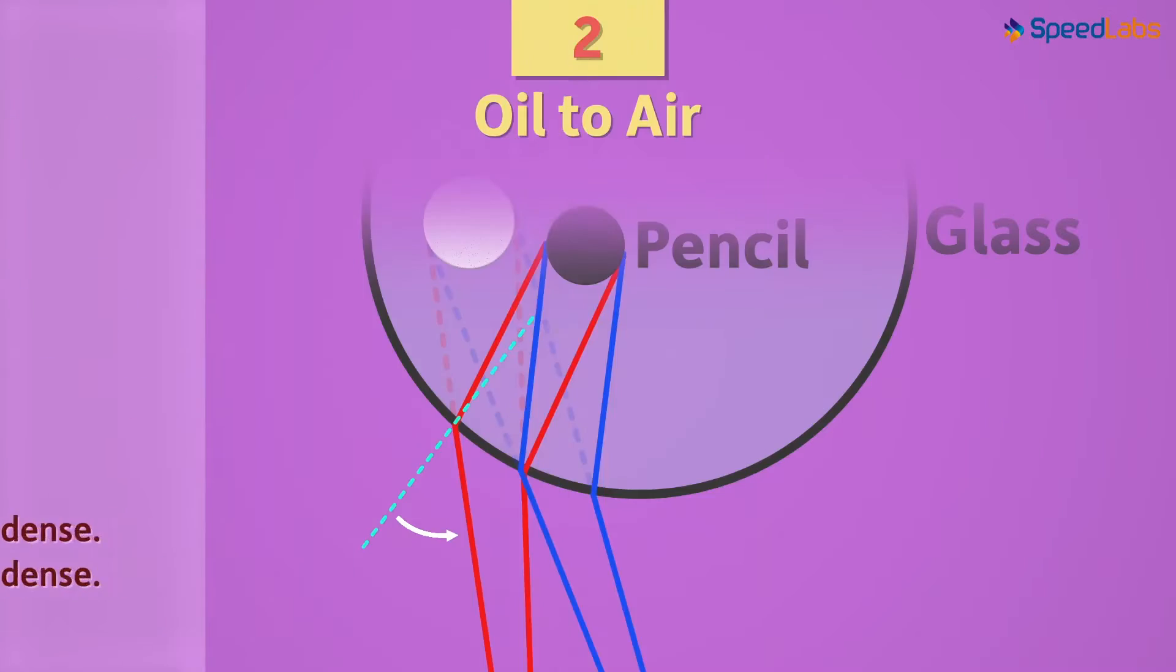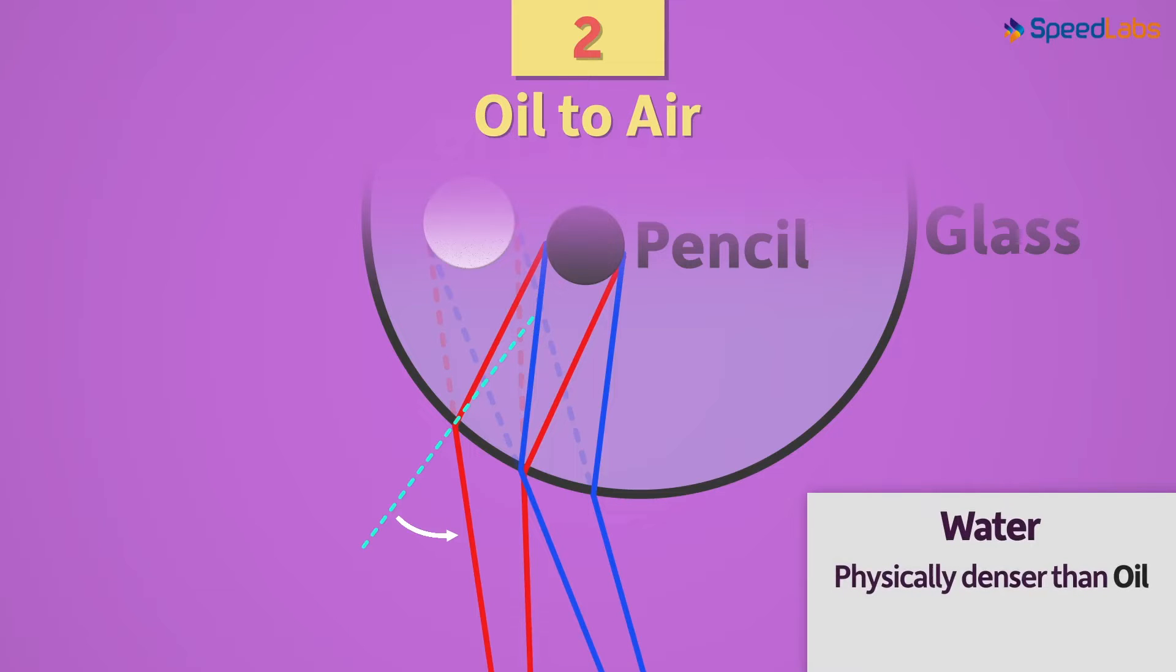A perfect example here is that of water, which is physically denser than oil, but is optically rarer than it.